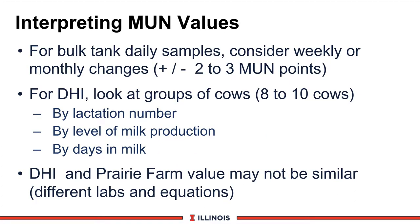Let's look at some variables. For bulk tank milk samples, we would like to see weekly or monthly values. I prefer a weekly average because bulk tanks will jump around a little bit and that is not always explainable. On DHI records, look at groups of cows. Pennsylvania researchers suggest groups of eight or ten cows should give you plus or minus one point from the real value.